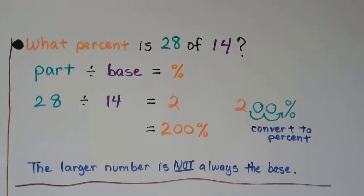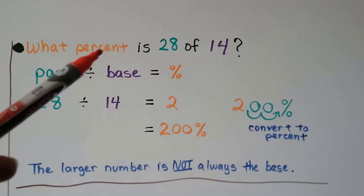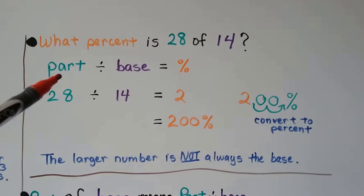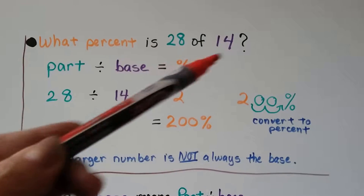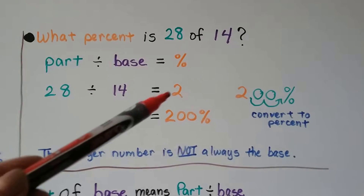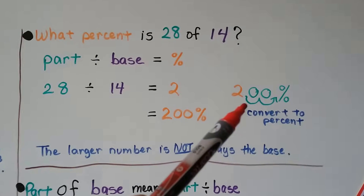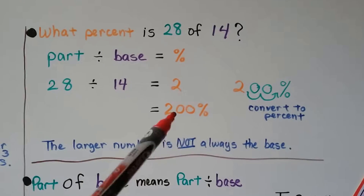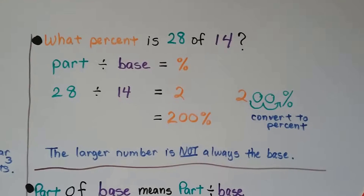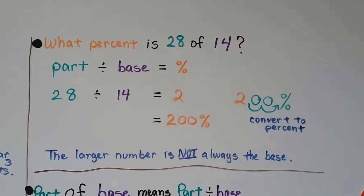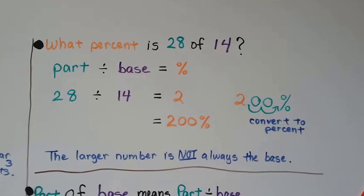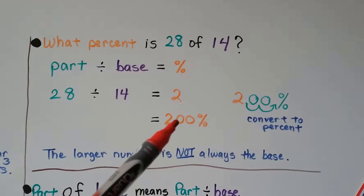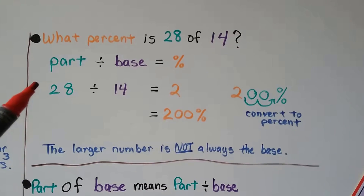What percent is 28 of 14? We need to find the rate. We do the part divided by the base — but look, 28 is bigger than 14. We do 28 divided by 14 and get 2. We convert it to a percentage by moving the invisible decimal point behind the 2 back two hops and adding the percentage sign: that gives us 200 percent. Two whole is 200 percent, because one whole is 100 percent. So the larger number is not always the base — be careful. You have to look at the wording.